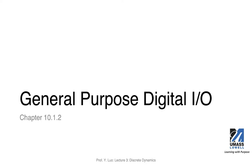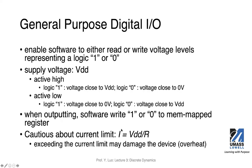Let's talk about general purpose IO and digital IO. In the textbook, there's a section in chapter 10 — 10.1.2 — that talks about general purpose IO. I want to move that content here today to help you understand some of the concepts you'll use in the first lab.